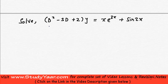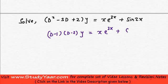So, what do we have over here? This I can write as (D-1)(D-2)y = xe^(3x) + sin(2x).